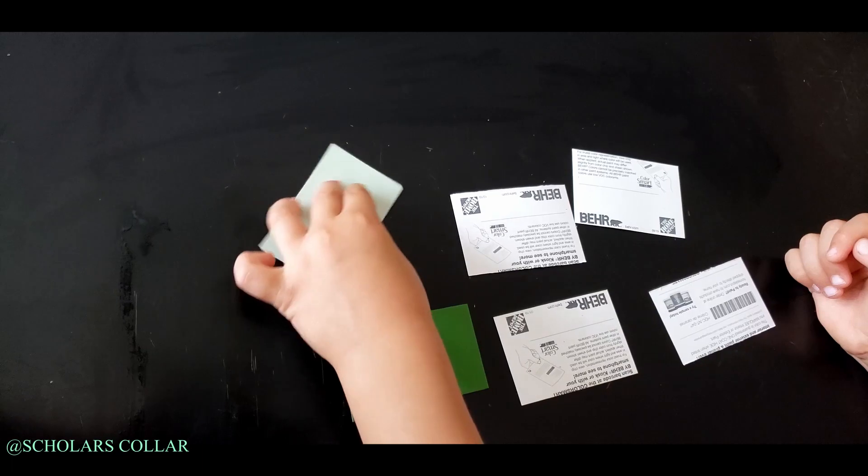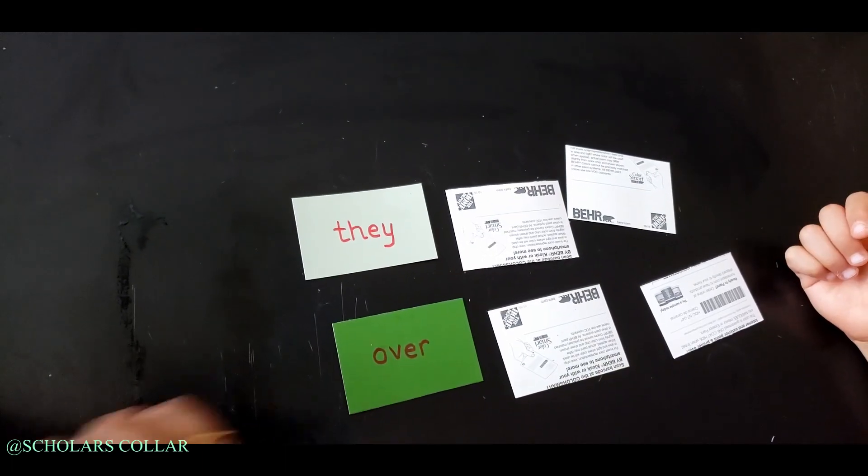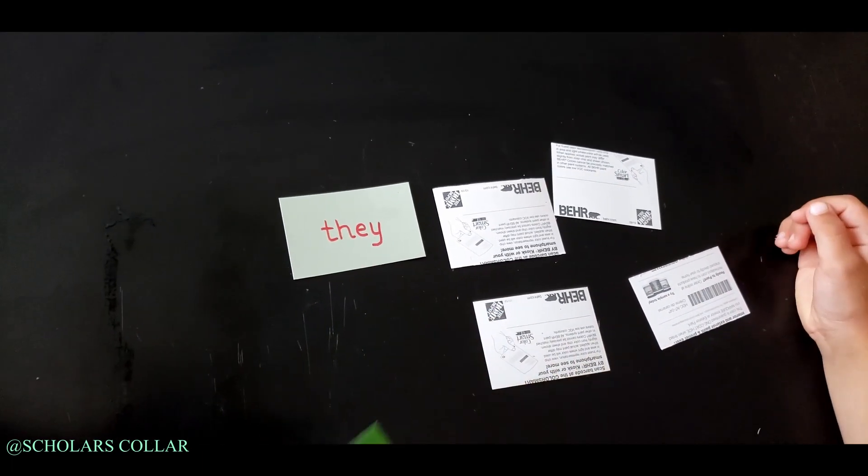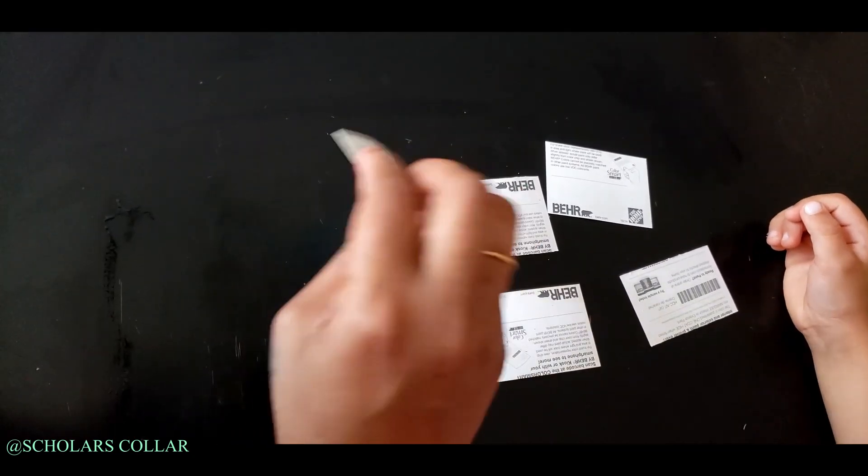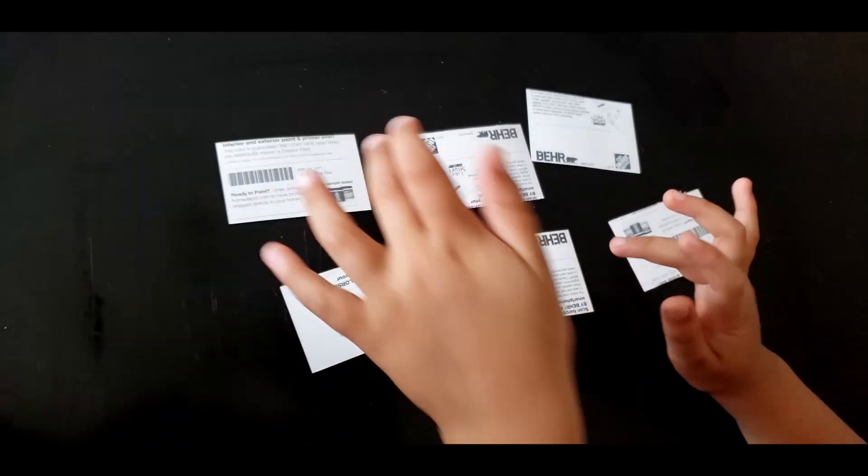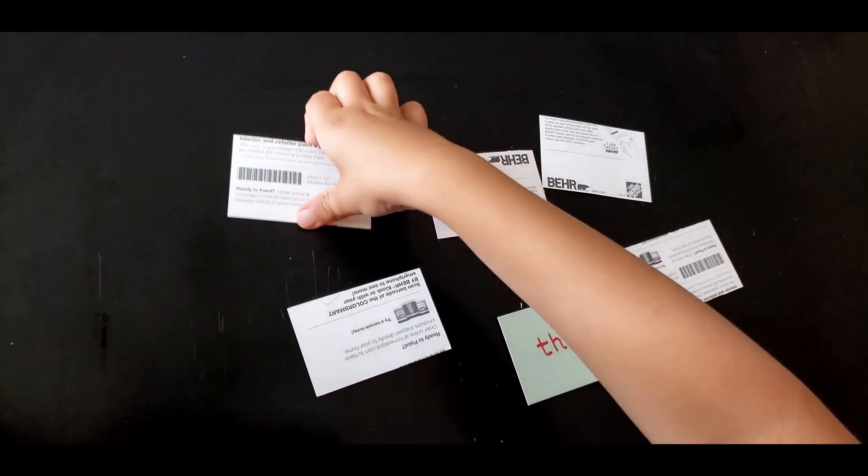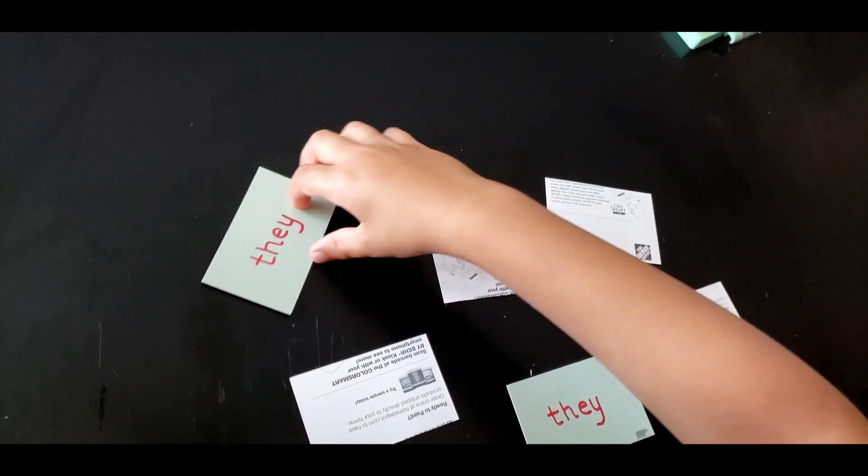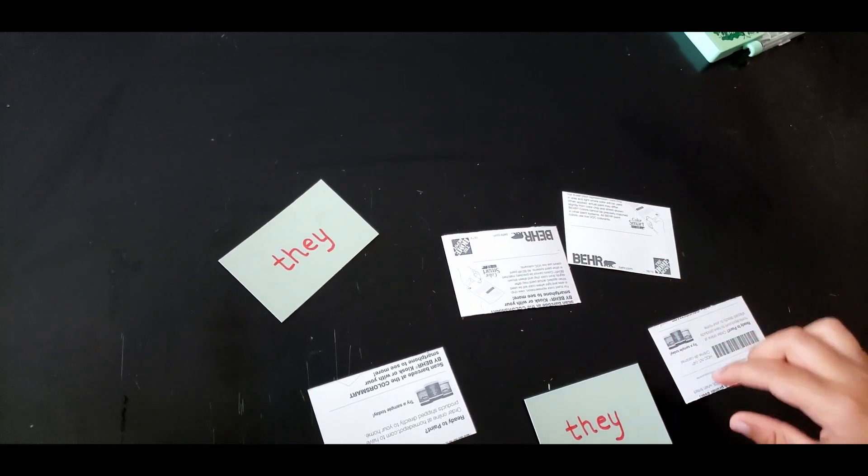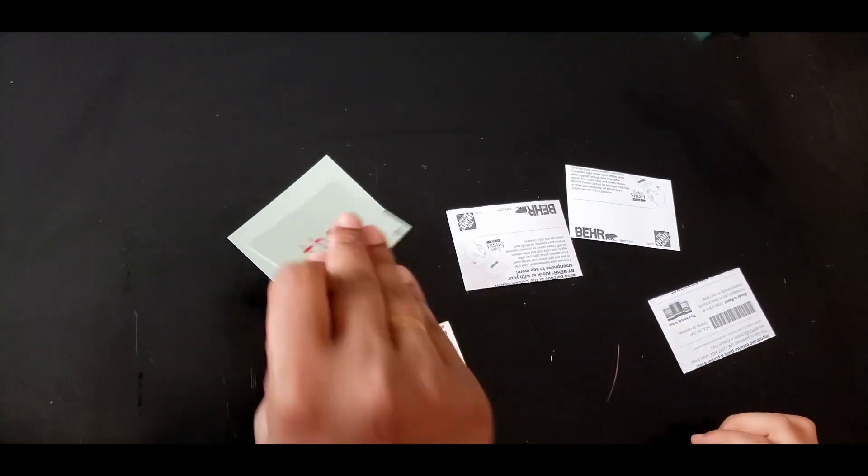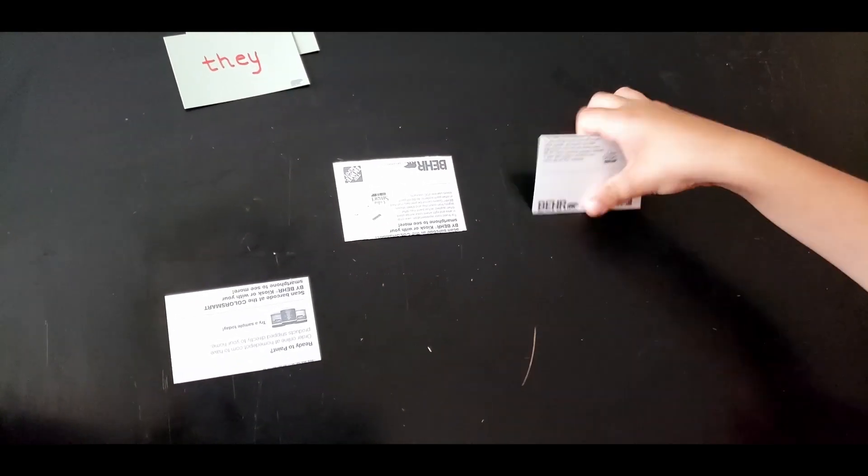When you're playing this game, make sure only two cards are flipped at one time. Here he flipped two cards but knew where the other 'they' card was, so he wanted to flip the third card. You don't want that to happen.